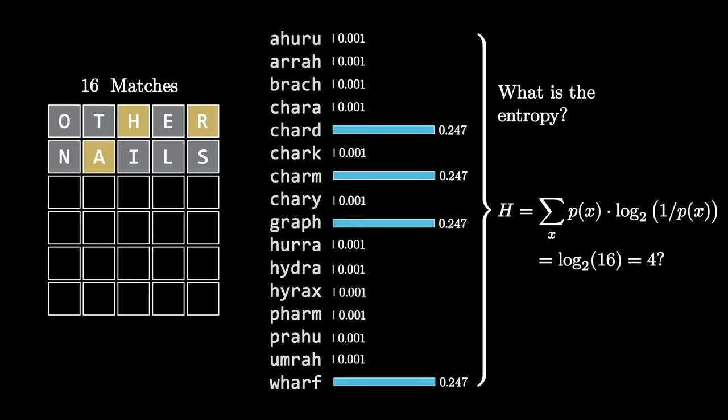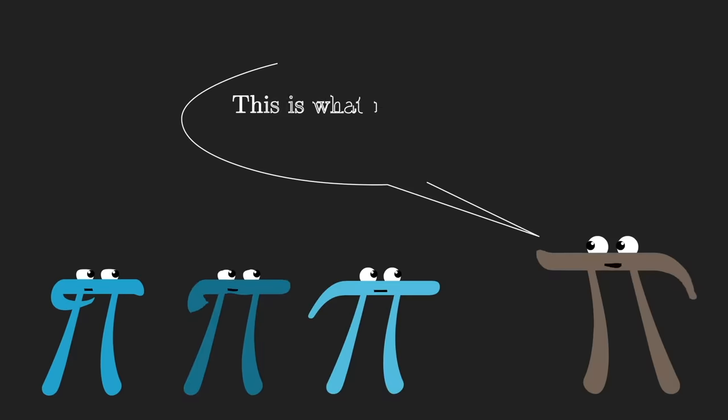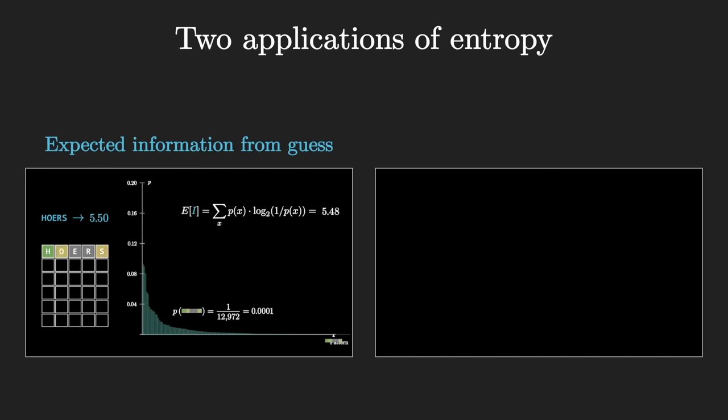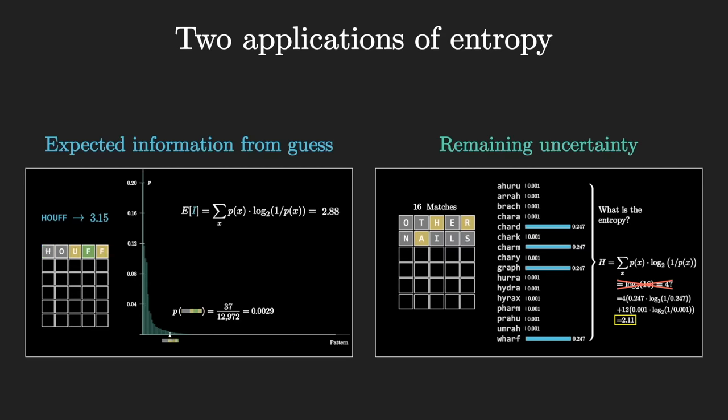If entropy was purely measuring the number of matches here, then you might expect it to be something like the log base two of 16, which would be four, two more bits of uncertainty than we had before. But of course, the actual uncertainty is not really that different from what we had before, because just because there's these 12 really obscure words doesn't mean that it would be all that more surprising to learn that the final answer is charm, for example. So when you actually do the calculation here, and you add up the probability of each occurrence times the corresponding information, what you get is 2.11 bits, which is saying it's basically two bits, basically those four possibilities, but there's a little more uncertainty because of all of those highly unlikely events, though if you did learn them, you'd get a ton of information from it. So zooming out, this is part of what makes Wordle such a nice example for an information theory lesson. We have these two distinct feeling applications for entropy, the first one telling us what's the expected information we'll get from a given guess, and the second one saying can we measure the remaining uncertainty among all of the words that we have possible.